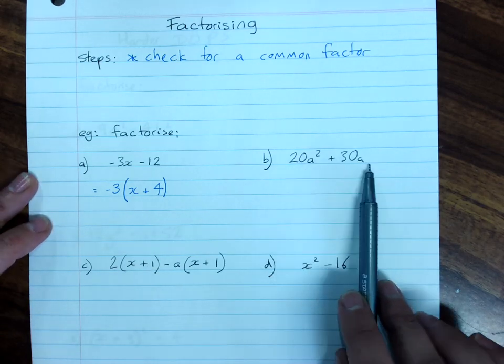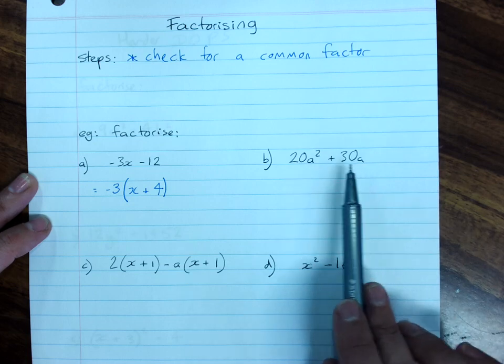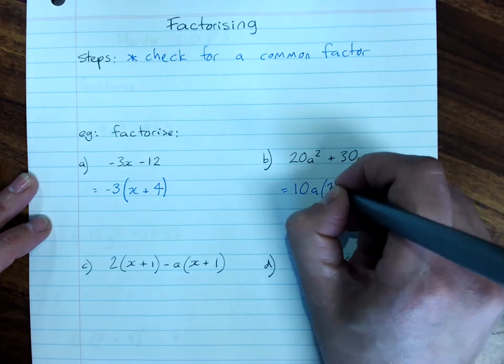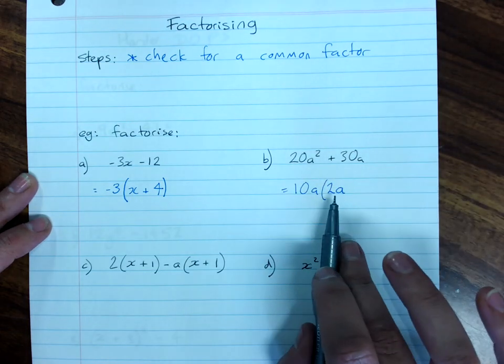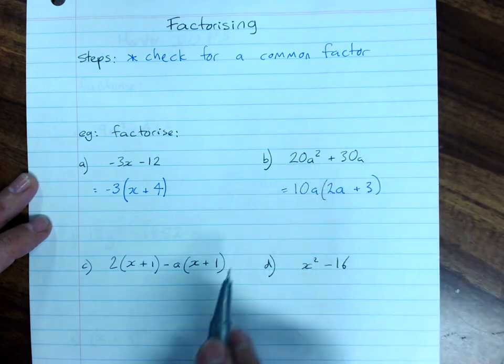Looking for the HCF, 10 goes into both of the coefficients, a goes into both. So my HCF will be 10a, with a remaining factor of 2a and positive 3.